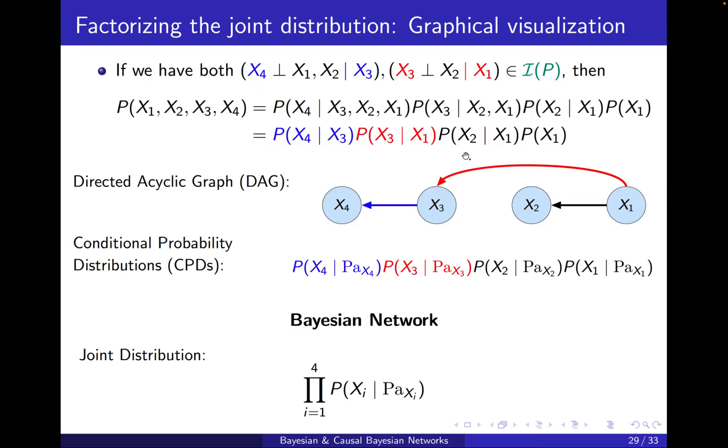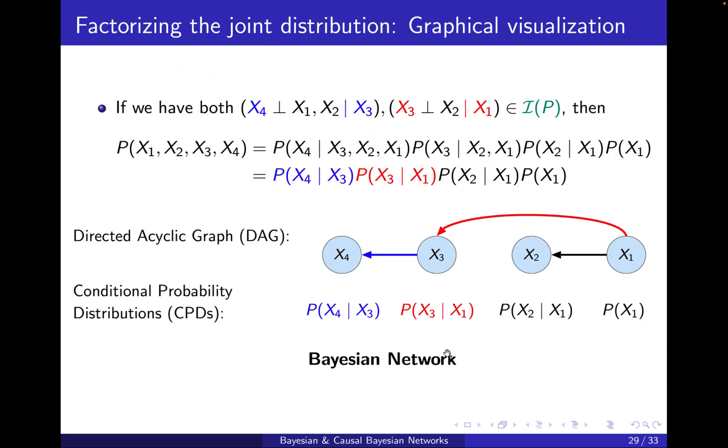of each of the variable conditioned on the parents of that variable in the graph G. This notation G here is to indicate that this is based on the graph. We are not assuming that the graph is necessarily obtained from the chain rule or anything. It's just given an arbitrary DAG with the same variables as in the distribution. We say that the distribution P factorizes according to this graph if we can write down the joint distribution as a multiplication of the CPDs where each variable is conditioned on its parent.